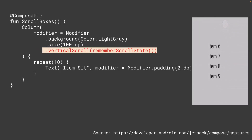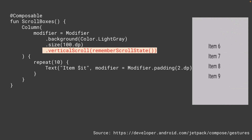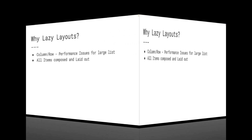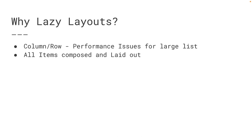What if you have a large number of items and you need scrolling? You can make the column scrollable by using the vertical scroll modifier, and for row you can use the horizontal scroll modifier. But if things can be solved using column or row, why do we need lazy layouts then? Using column or row with a large number of items can cause performance issues, since all the items will be composed and laid out whether or not they are visible.